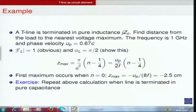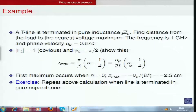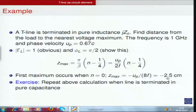Using omega/beta = u_p and omega = 2*pi*f, we can write z_max = (u_p / 2f) * (n - 1/4). The first maximum occurs at n=0, giving location = -u_p/(8f). Substituting f = 1 GHz and u_p = 0.7c gives a maximum at approximately -2.5 centimeters from the load.